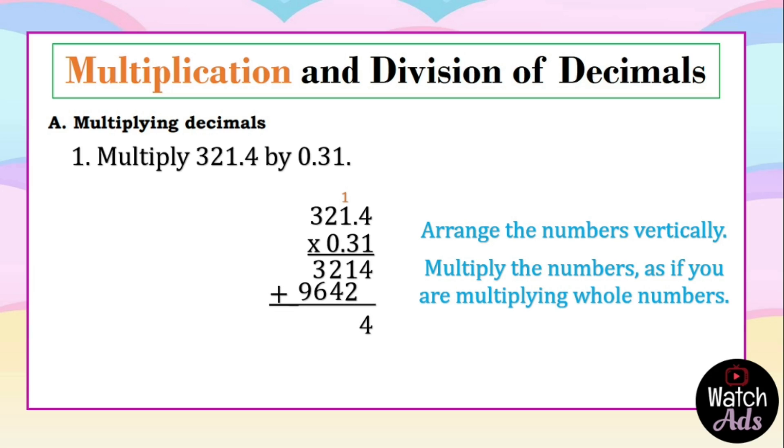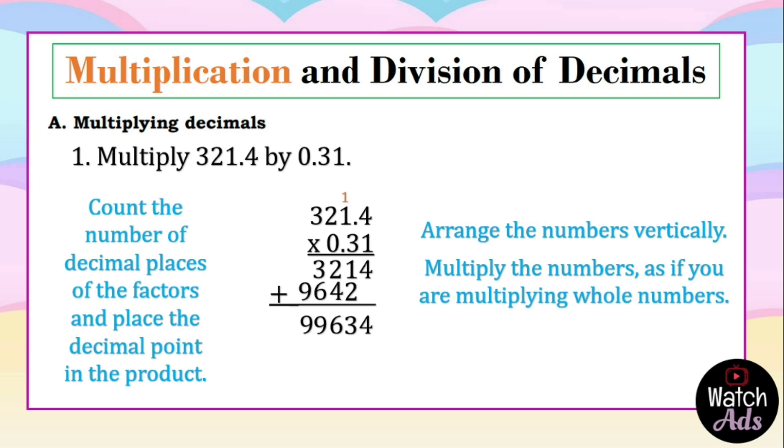Now we add them, bring down 4. 1 plus 2 is equal to 3. 2 plus 4 is equal to 6. 3 plus 6 is equal to 9. And then we bring down 9. Next, we count the number of decimal places of the factors and place the decimal point in the product. How many decimal places does 321.4 have? We have 1 decimal place and 2 decimal places. We have a total of 3 decimal places. So we take 3 numbers and put it on the right side of the decimal point. And we put the decimal point in between 9 and 6. Our final answer, 99.634 thousandths.